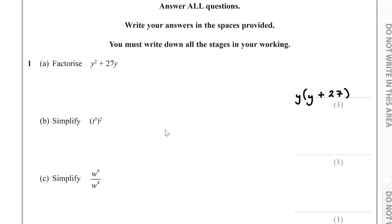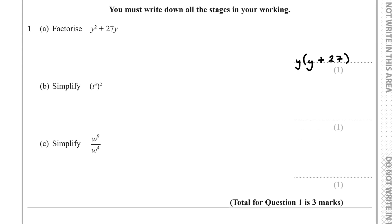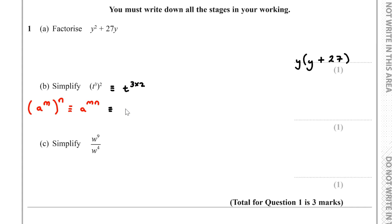For part B, we have to simplify t cubed to the power of 2. We use the law of indices: when we have a number a raised to the power of m, then raised to the power of n, this is the same as multiplying the powers — a to the power of mn. So t cubed squared is the same as t to the power of 3 times 2, which is t to the power of 6.